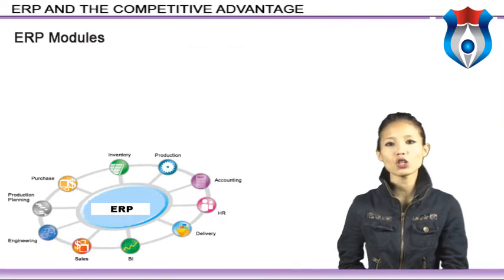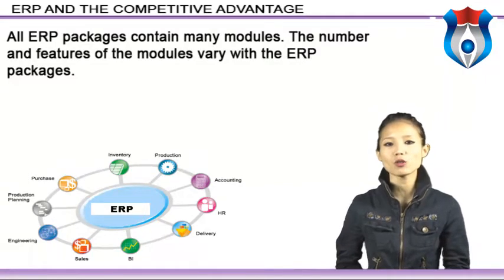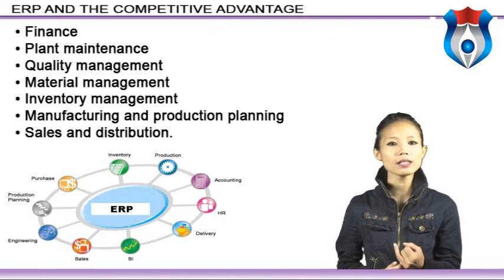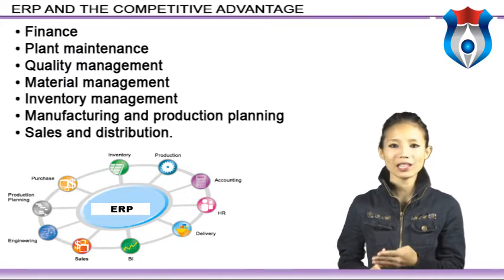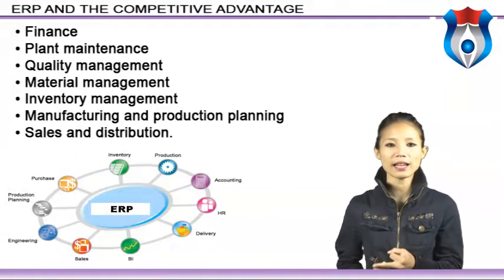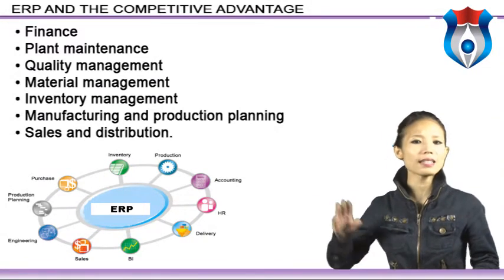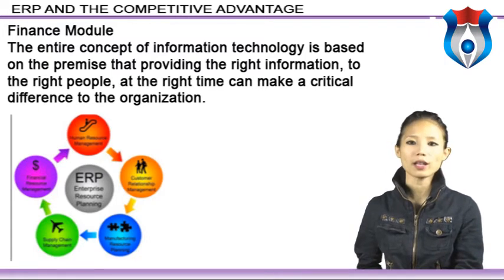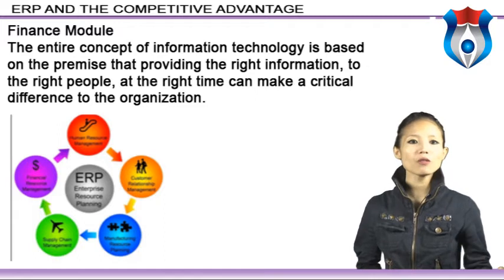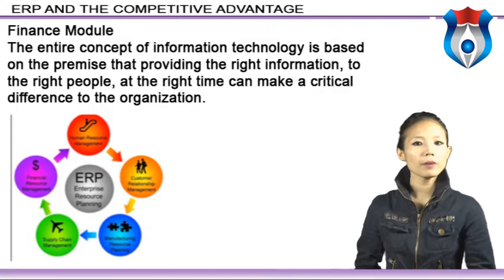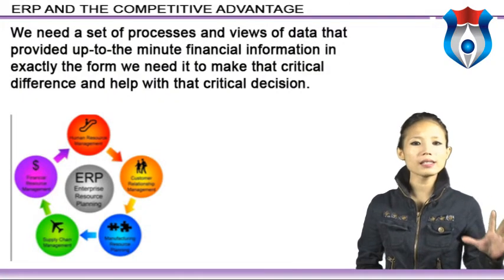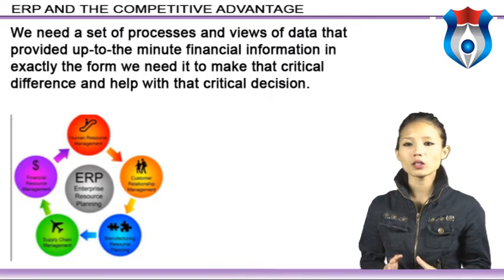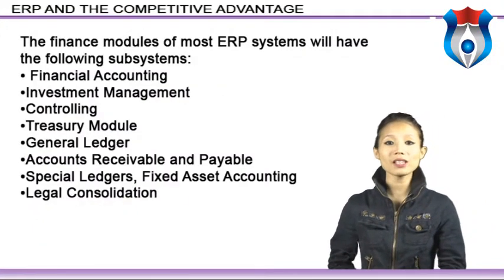All ERP packages contain many modules. The number and features of the modules vary by package. Some of the most common modules available in almost all packages are: Finance, Plant Maintenance, Quality Management, Material Management, Inventory Management, Manufacturing and Production Planning, and Sales and Distribution. The entire concept of information technology is based on the premise that providing the right information to the right people at the right time can make a critical difference to the organization. Much of this key information can be taken from financial data, but we need a set of processes and views of data that provide up-to-the-minute financial information in exactly the form needed to make that critical difference.